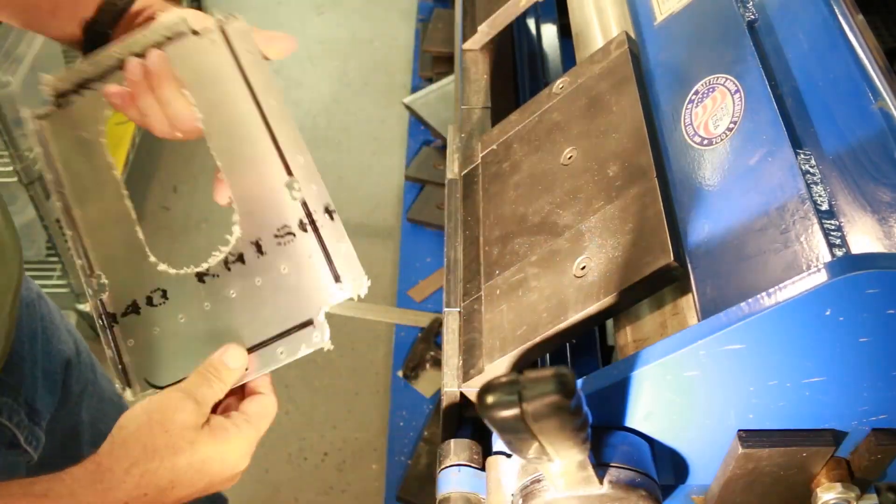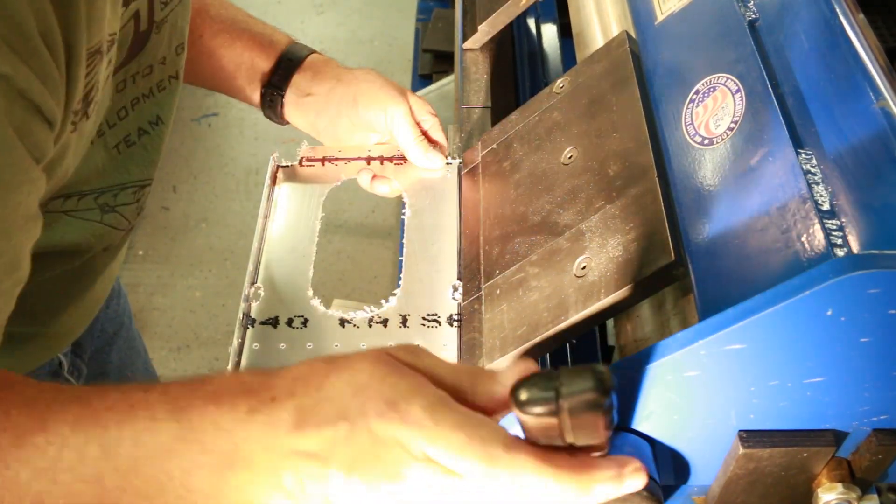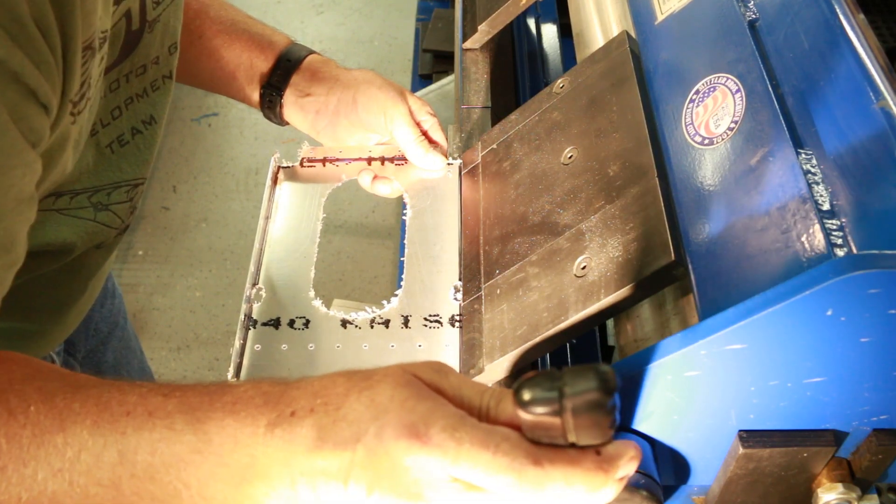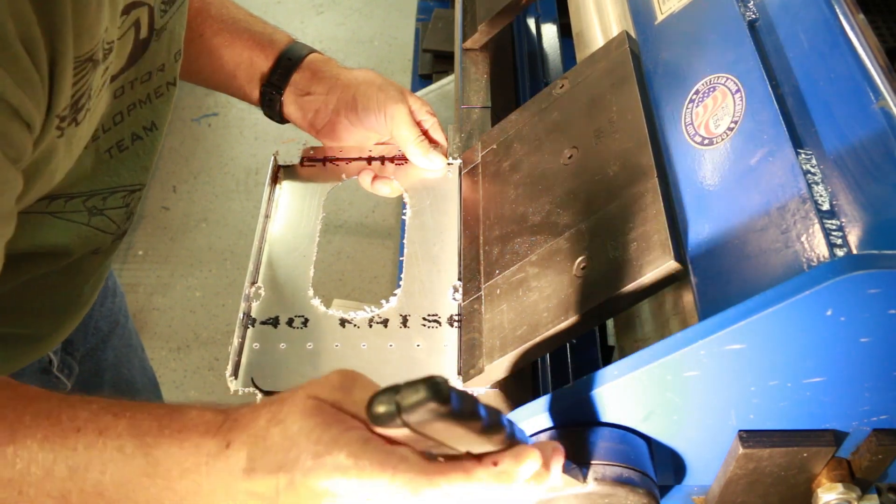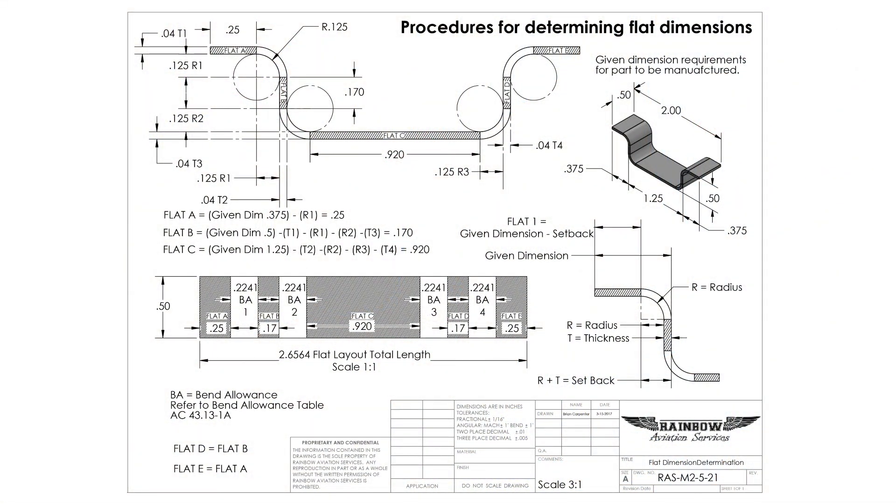Positioning the flat layout for bending can seem daunting at first, but once you understand the basic premise you will be saying to yourself 'why didn't I think of that?' In part one of this video, we created a flat layout that consists of the flats and the bend allowance. The bend allowance, and hopefully only the bend allowance, is the section of metal that we will be bending in the finger brake.